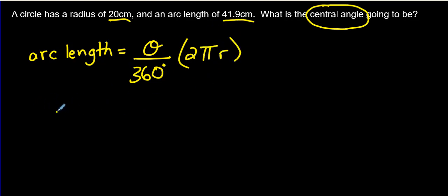So what do we know here? We know the arc length is 41.9. We don't know the central angle. We do know, and that's not a zero, folks. This is just a theta. It's just a symbol for what angle the central angle is going to be. And over here we have 2 pi and the radius is 20.